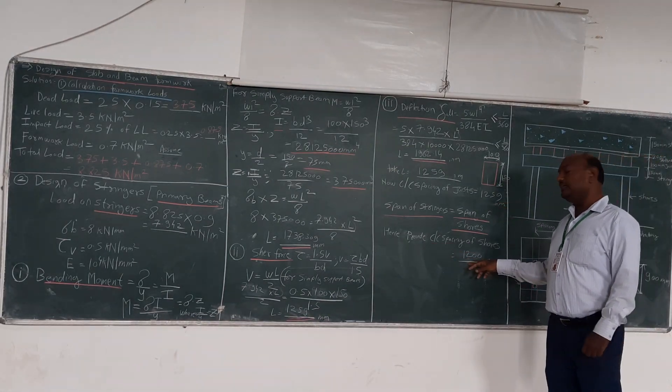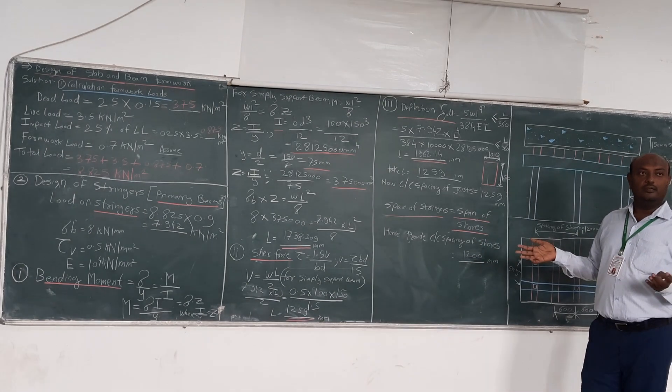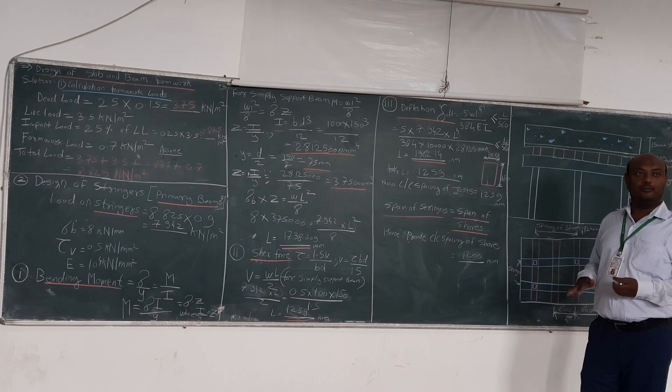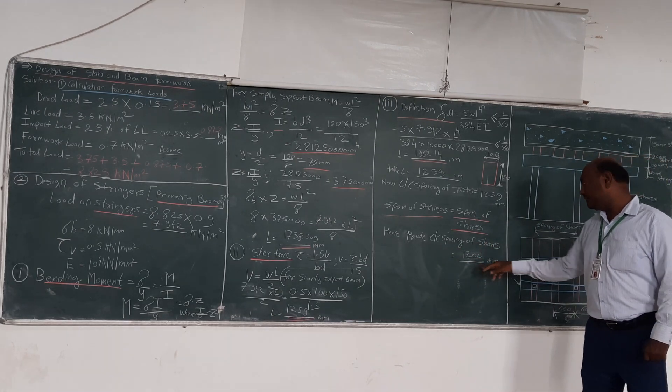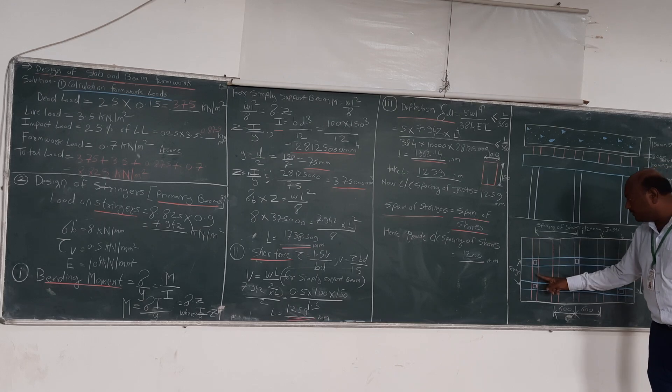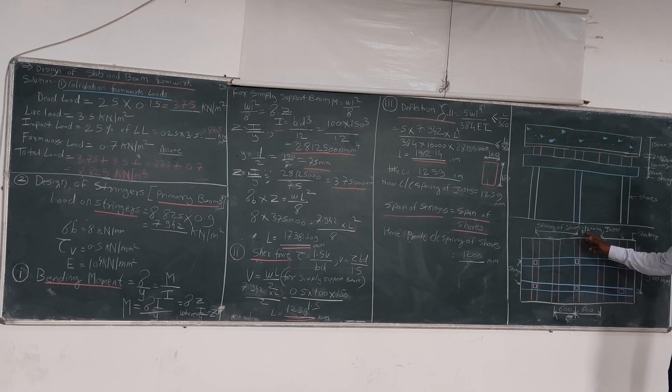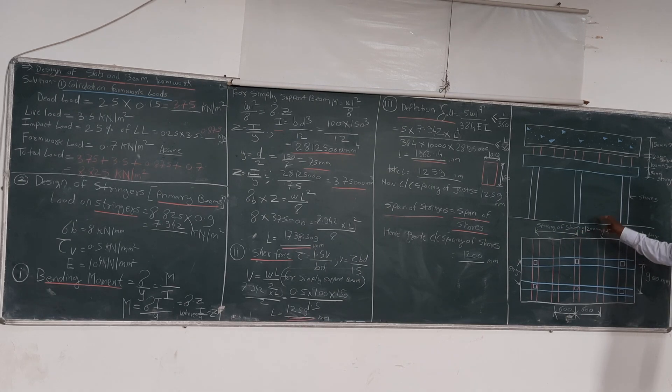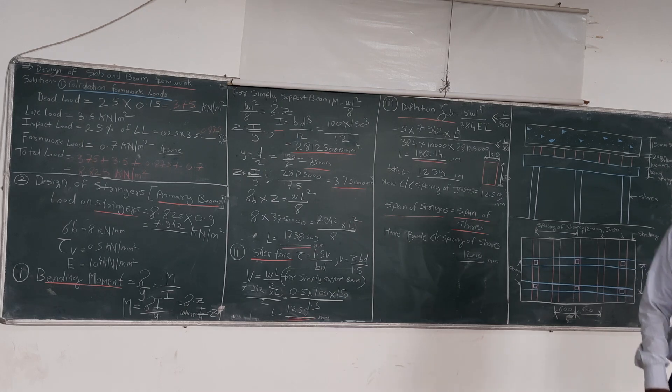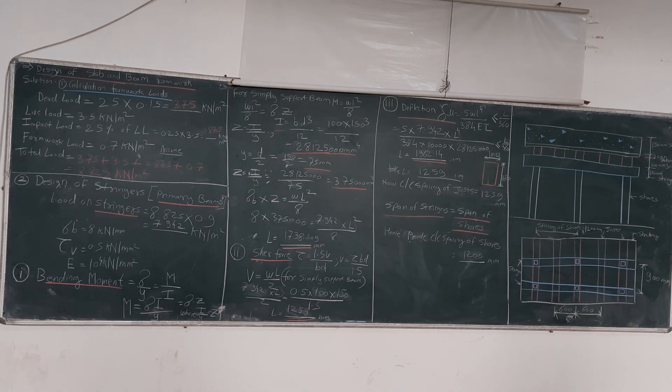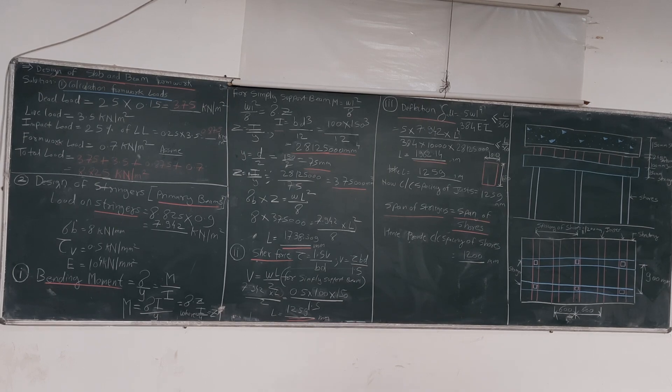We will go for 1200. We should go for minimum, not for more than—we should go for less than, not more than. So we will provide the spacing of the shore, that is 1200. So this is the spacing of the shore. So one shore is here, another is here. The spacing of the shore is how much? 1200 mm. So this is how we have designed the shore here. We will go further below.